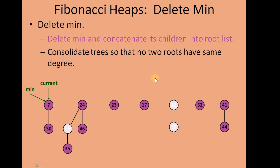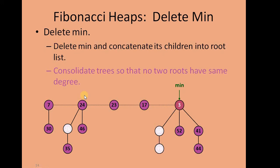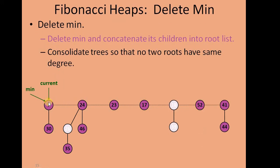Now the second step is consolidation of the tree so that no two roots have the same degree. Looking at the current root list: one root has degree one, another has degree one, then degree zero, degree zero, degree zero, and degree one. We can see there are many trees with the same degree, so we need to consolidate.